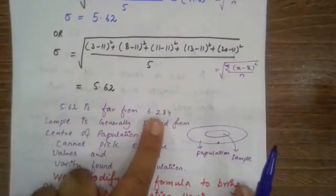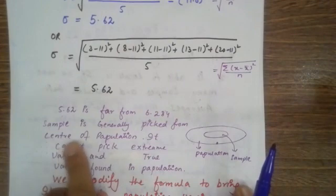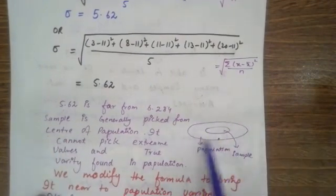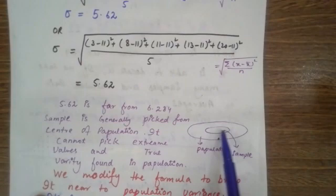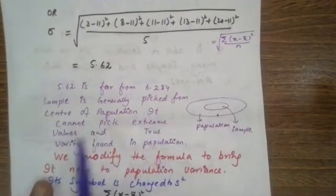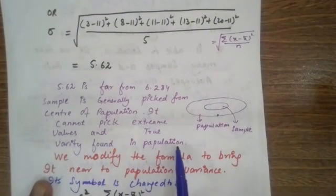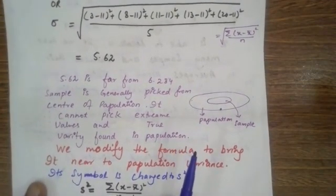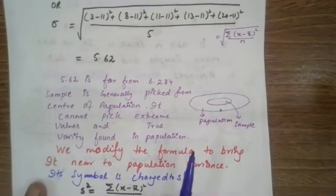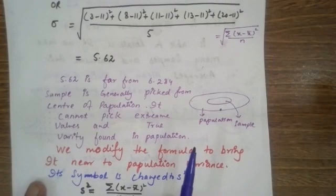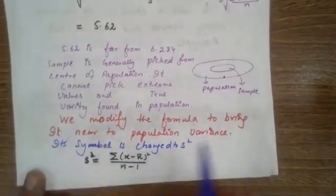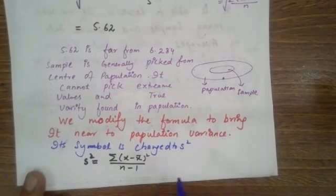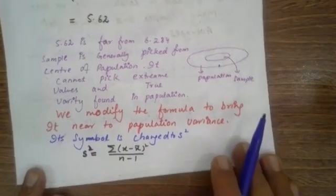5.62 is far from 6.284. A sample is generally picked from the center of the population. Whenever a sample is picked, it is always picked from the middle — it cannot pick extreme values, the values lying at the ends. Therefore, it cannot pick up the true variety found in the population. So the standard deviation of the sample will always be smaller than the standard deviation of the population. We therefore modify the formula to bring it nearer to the population variance.